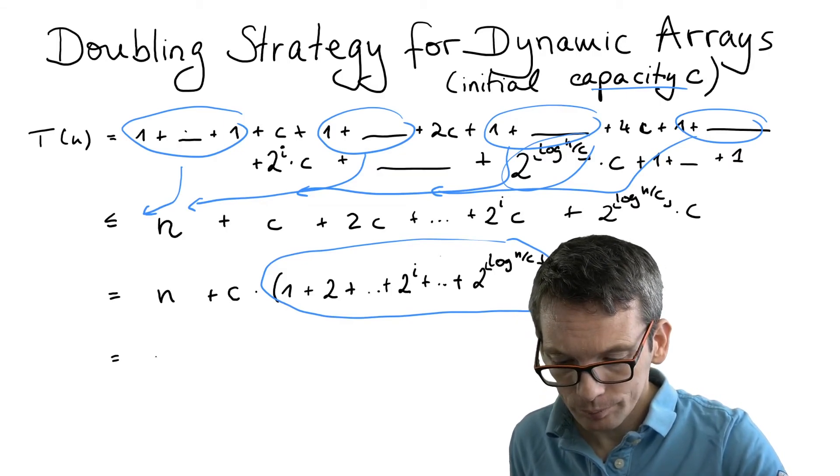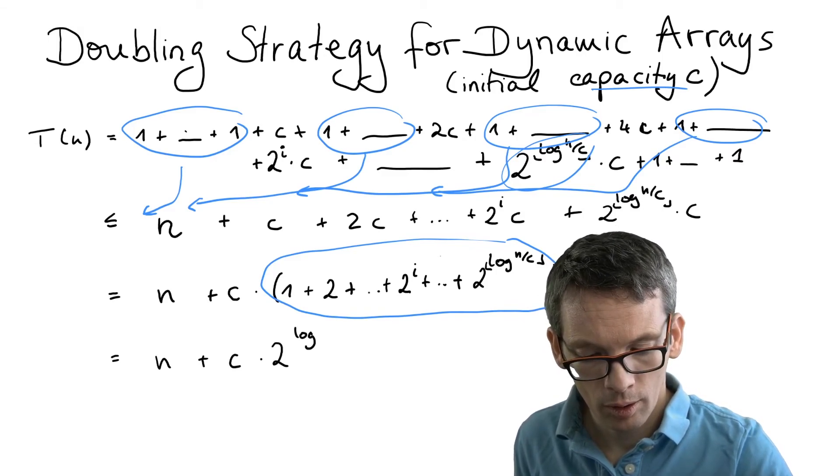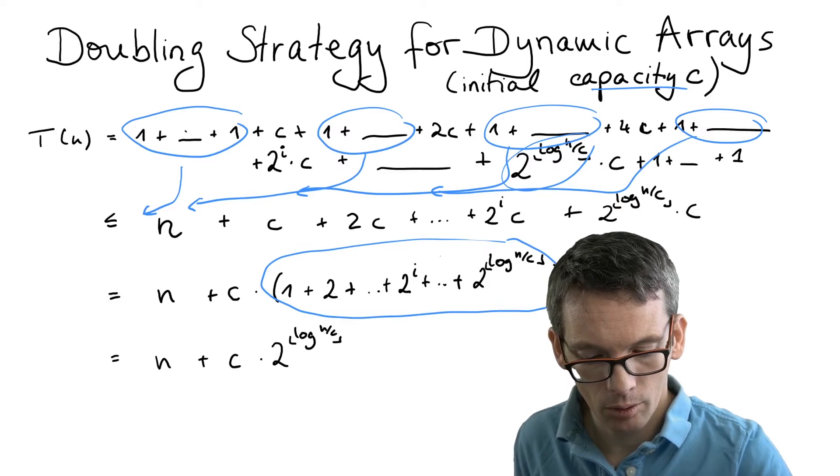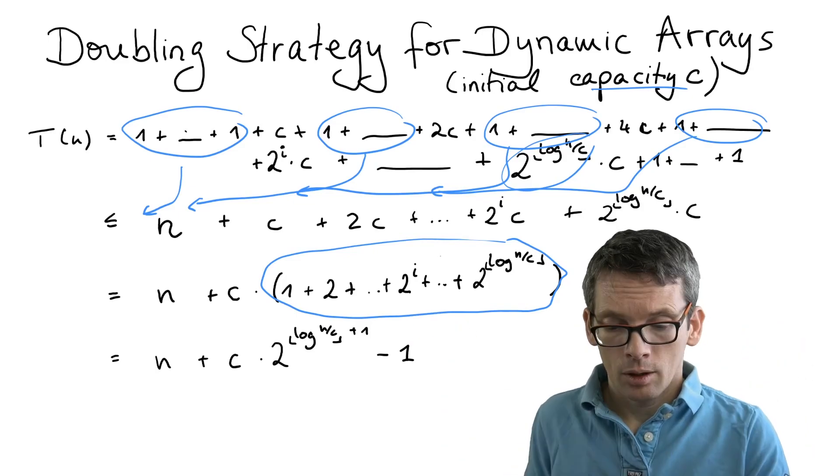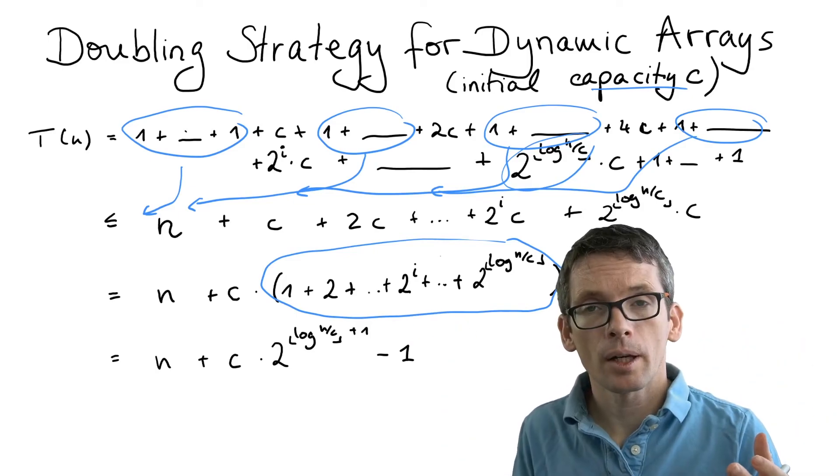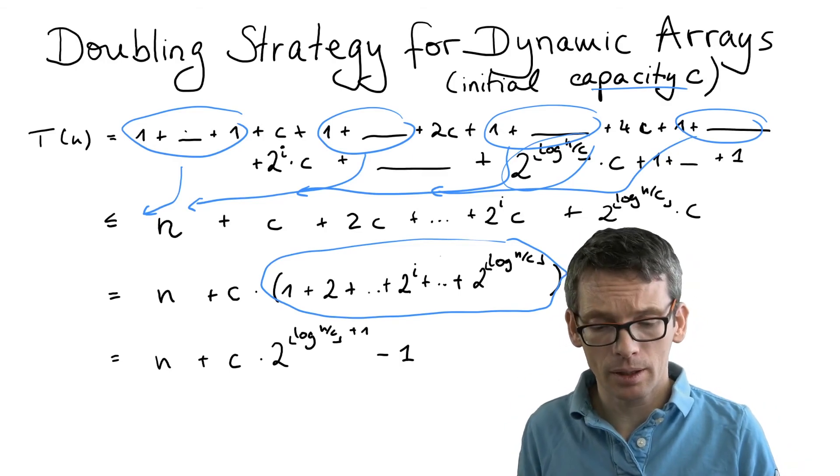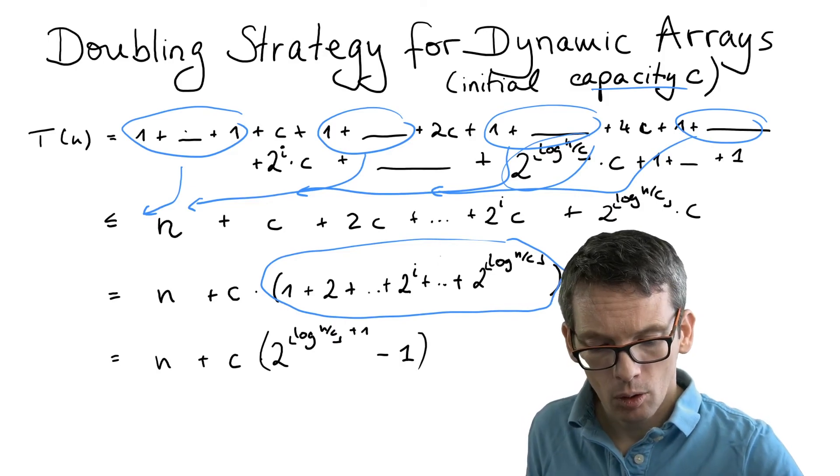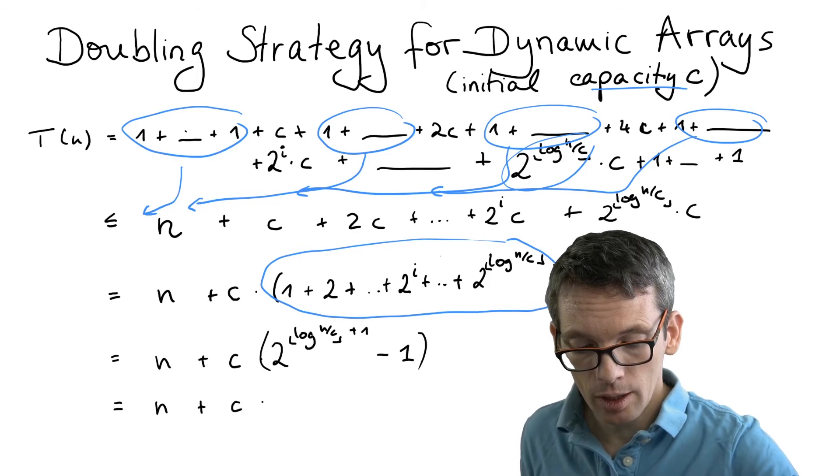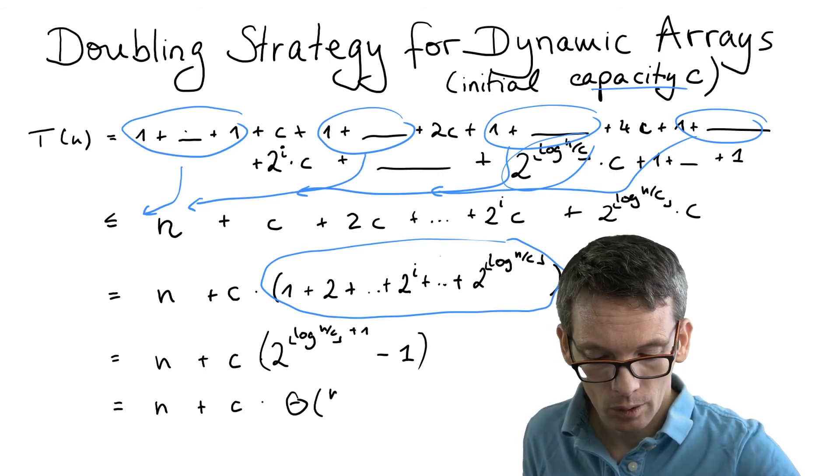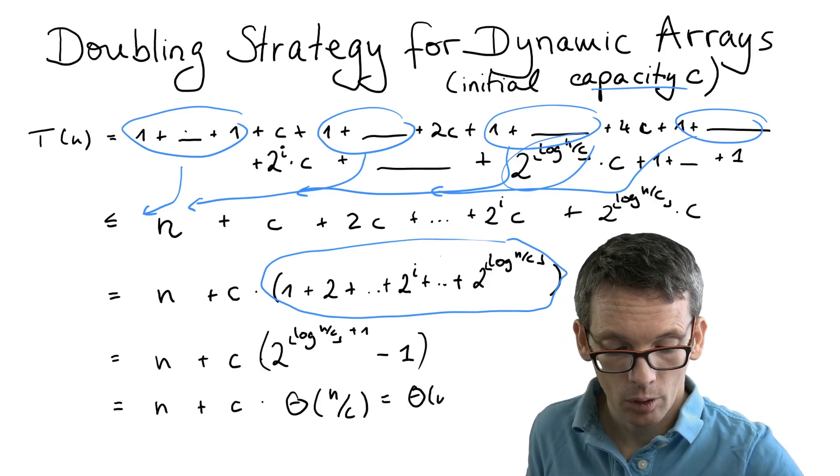So we get n plus c times 2 to the log n divided by c, rounded down, plus 1 minus 1. So the plus 1 in the exponent just says times 2. So 2 to the log n divided by c, that's simply order n divided by c, times 2 is still n divided by c of order. The minus 1 also doesn't matter in terms of the asymptotics. So we have n plus c theta of n divided by c, which then simply is theta of n.